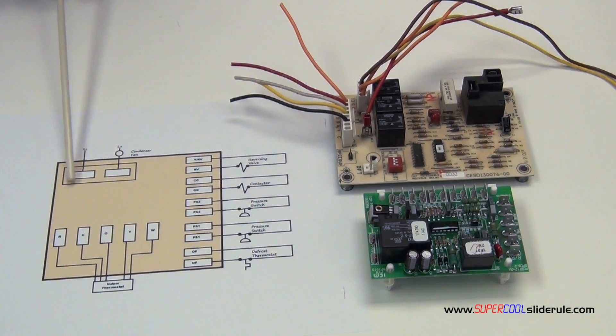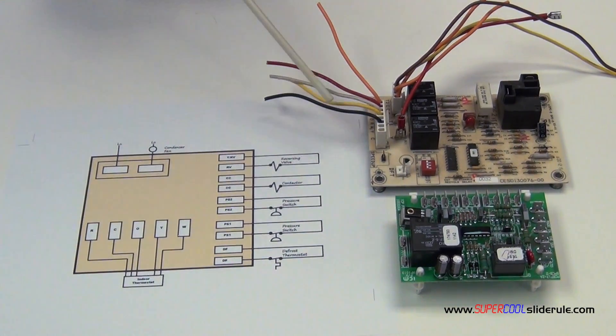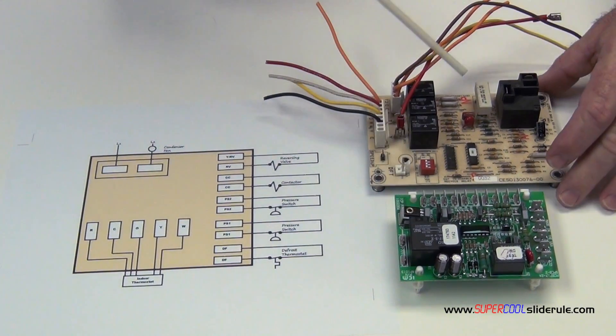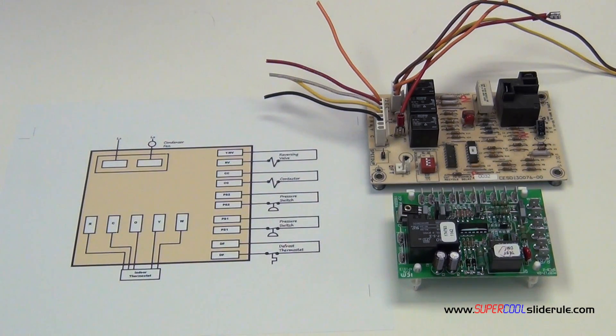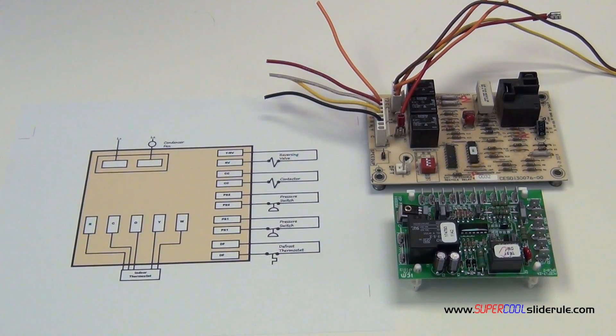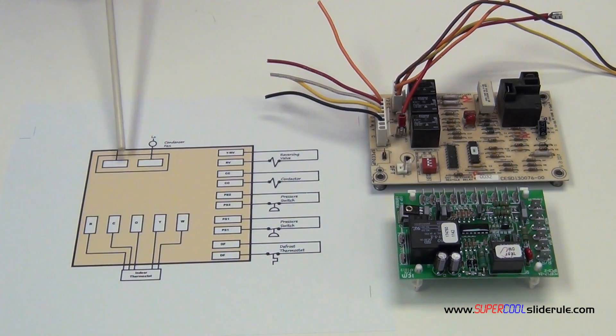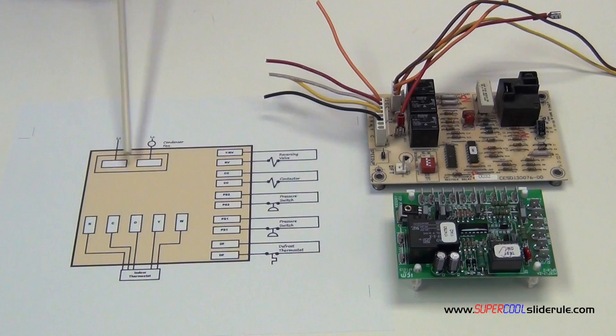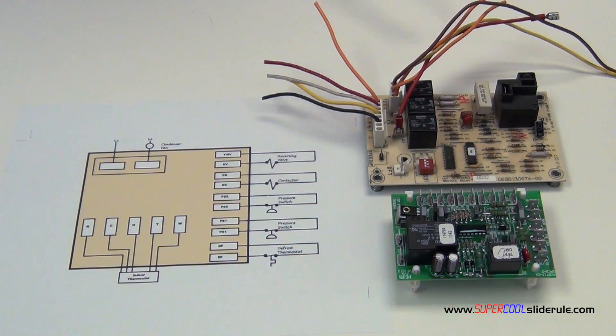The next thing we have is this right here. This is your condenser fan relay. On this unit it's right there, on this one it's here. What this does is controls the operation of the condenser fan. When the unit goes into defrost, this relay is not energized so the condenser fan does not run while the unit is defrosting. A lot of times technicians will forget that even on air conditioning, this relay must transfer the power from line one to line two through the condenser fan.